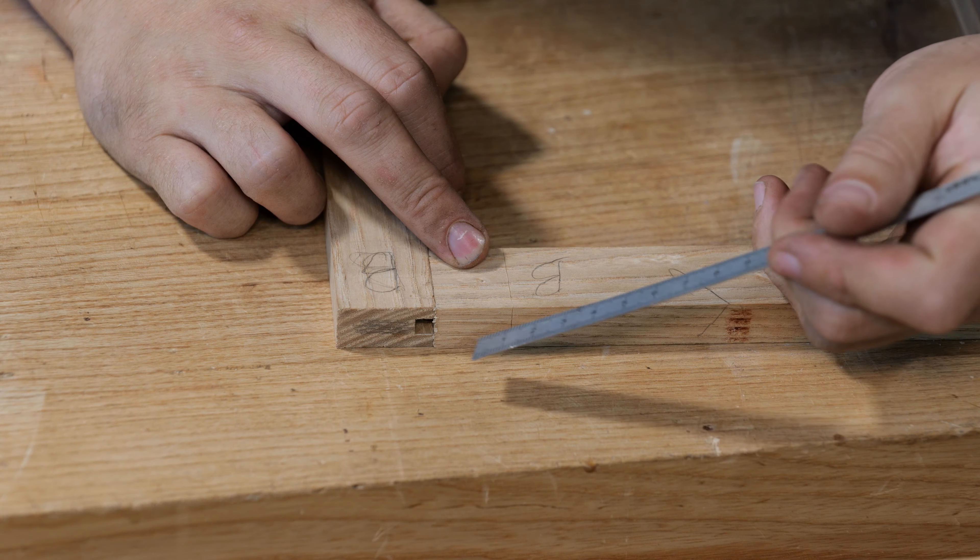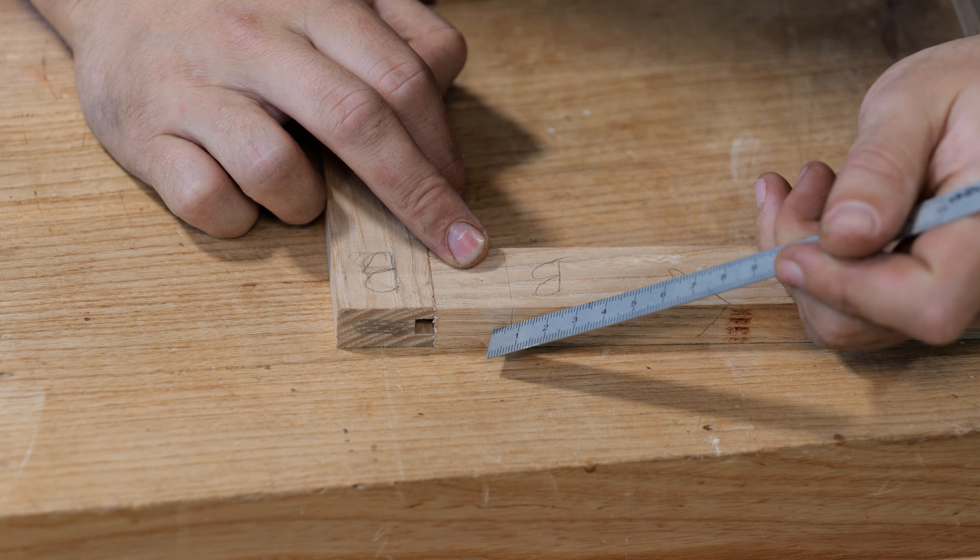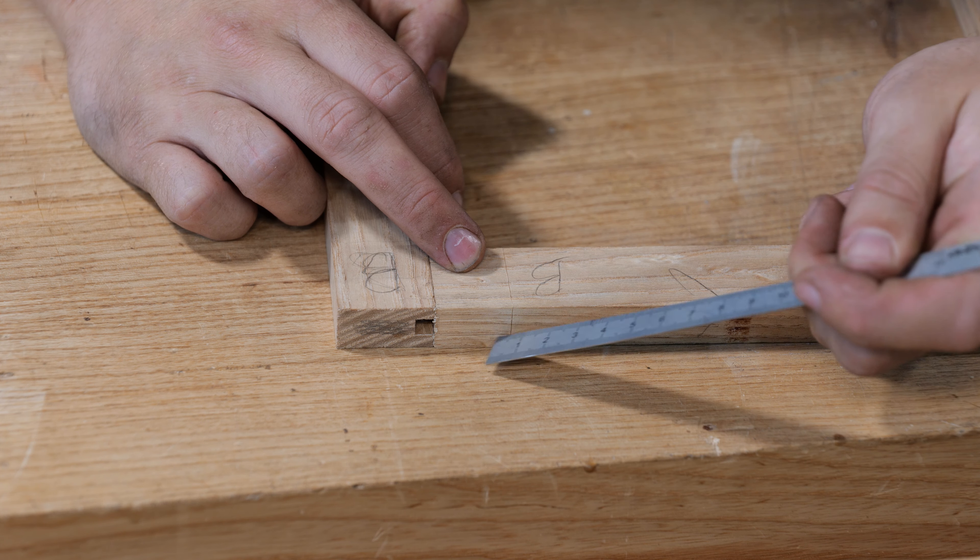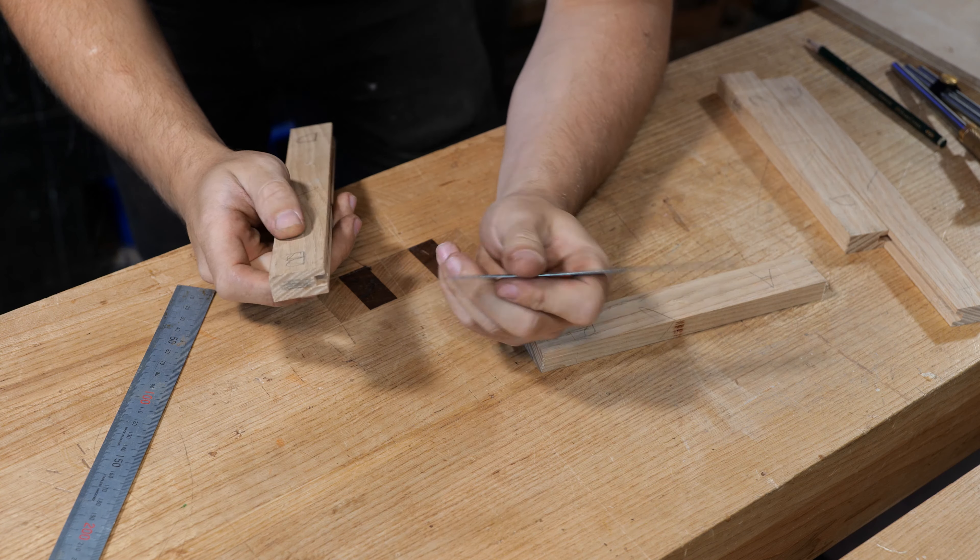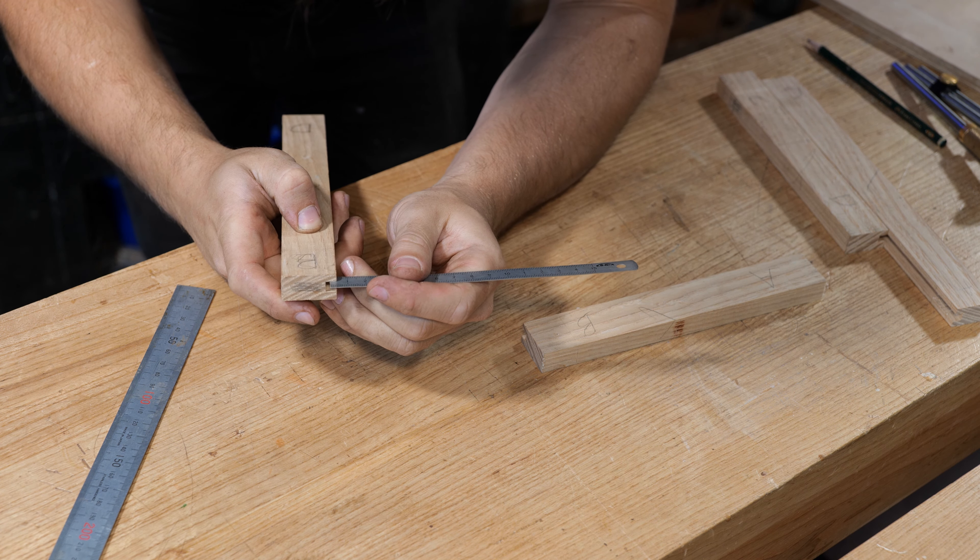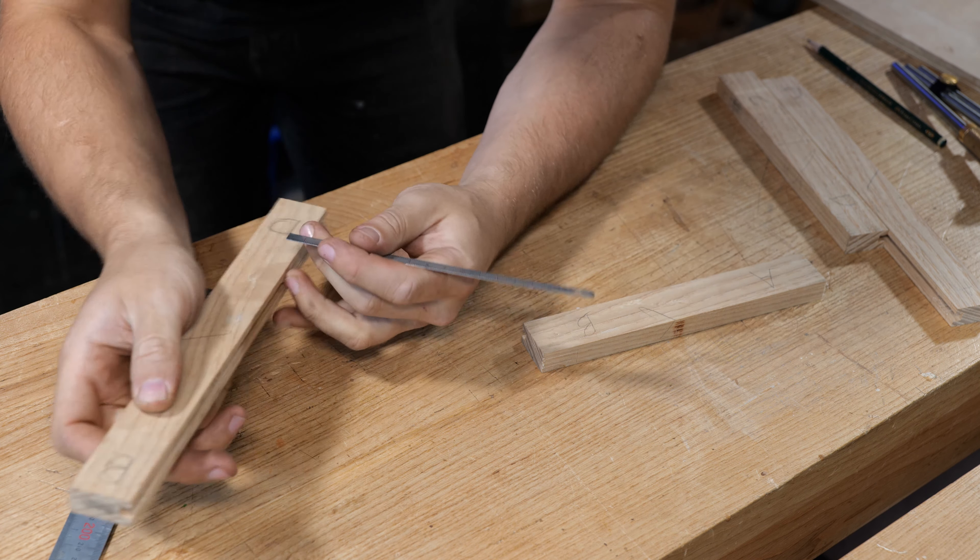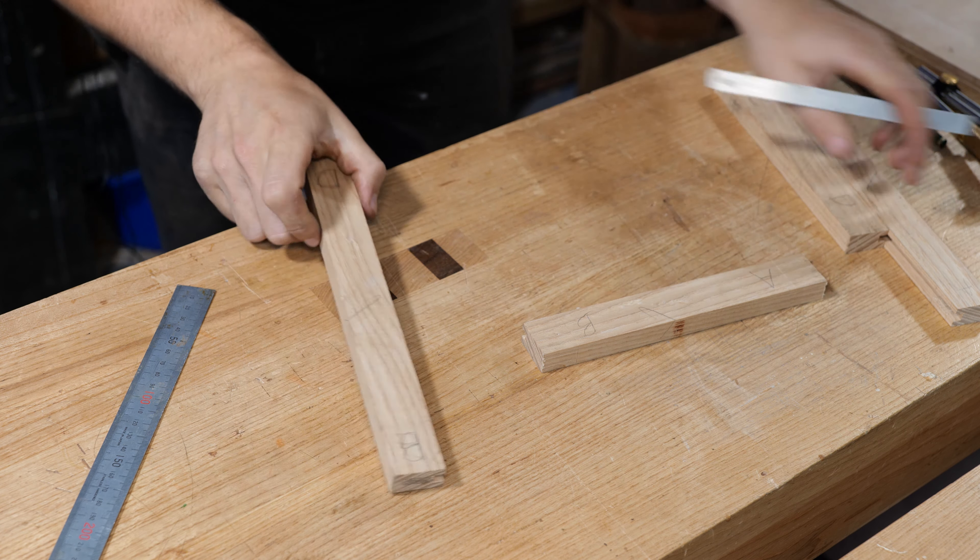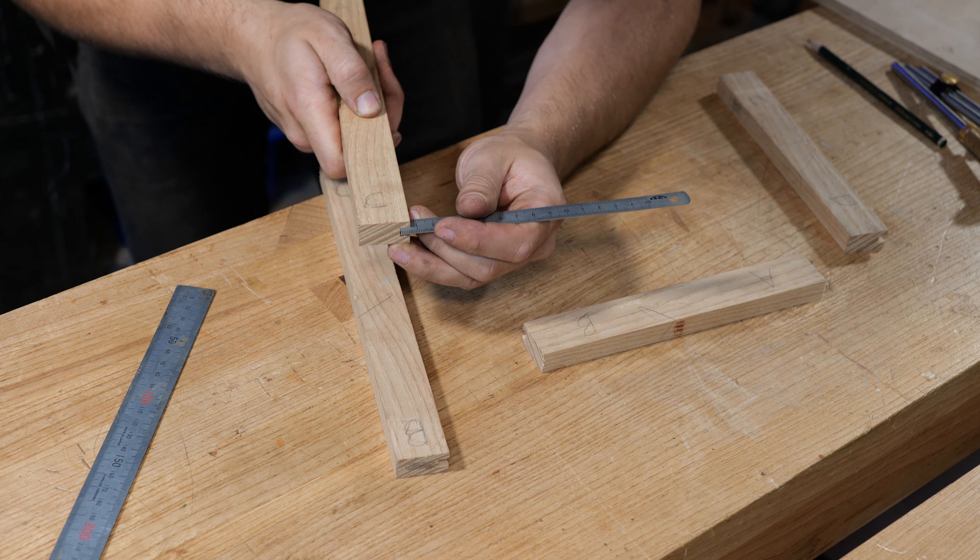Finally we need to mark out the little nub that sticks out beyond the shoulder line to fill out this area here. The technical name for this bit is called the haunch. To do that, simply double check the depth of the groove on all four corners of the stiles, just to ensure it's consistent all the way around. Bang on 6 millimeters in all these cases, which is good.